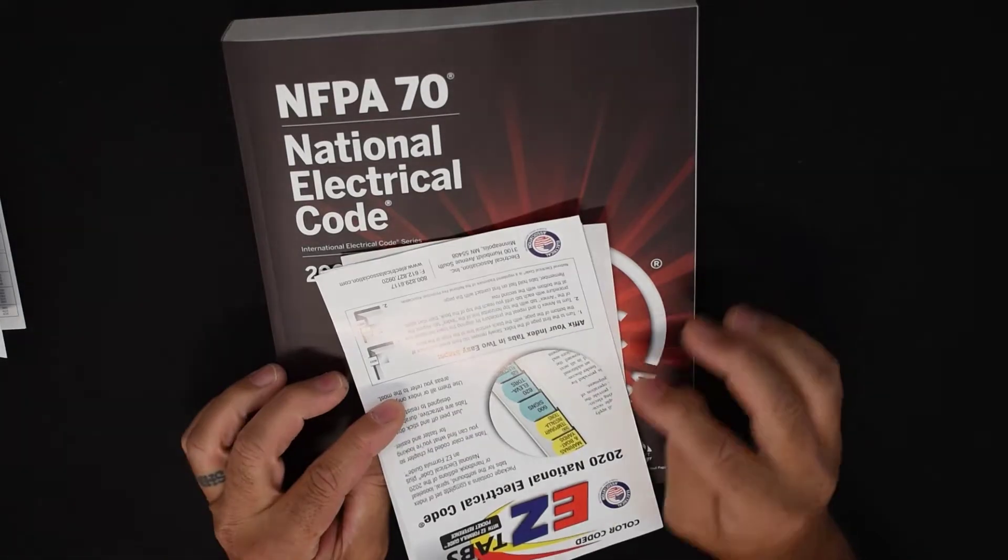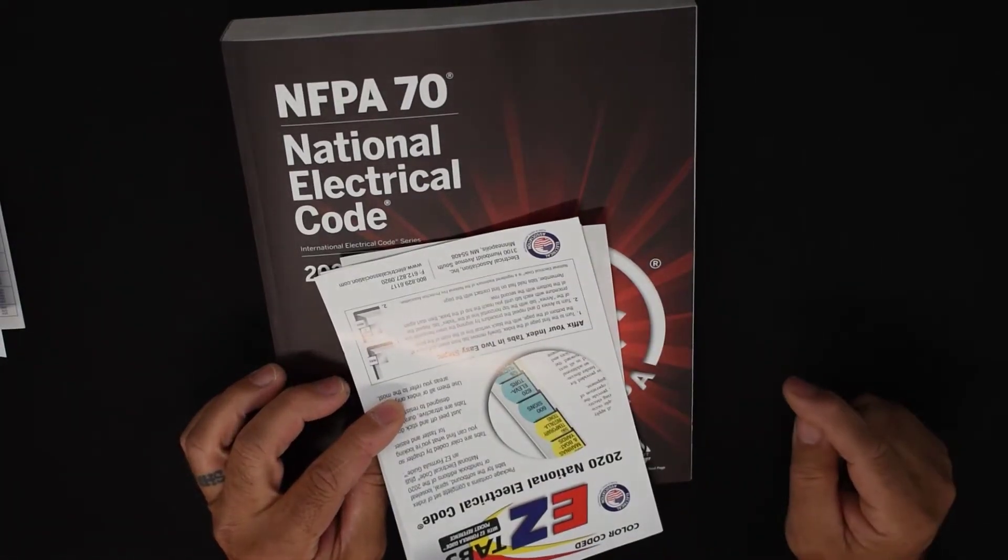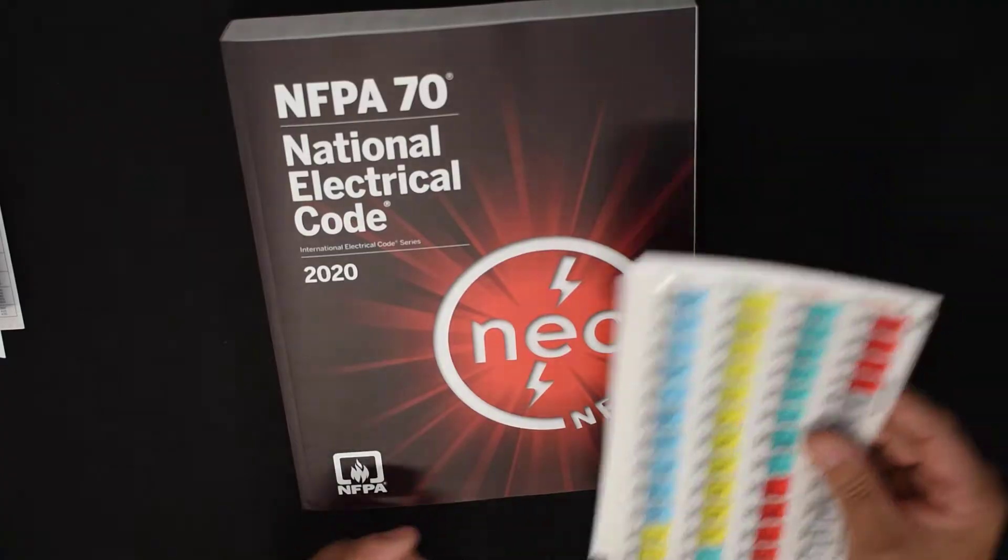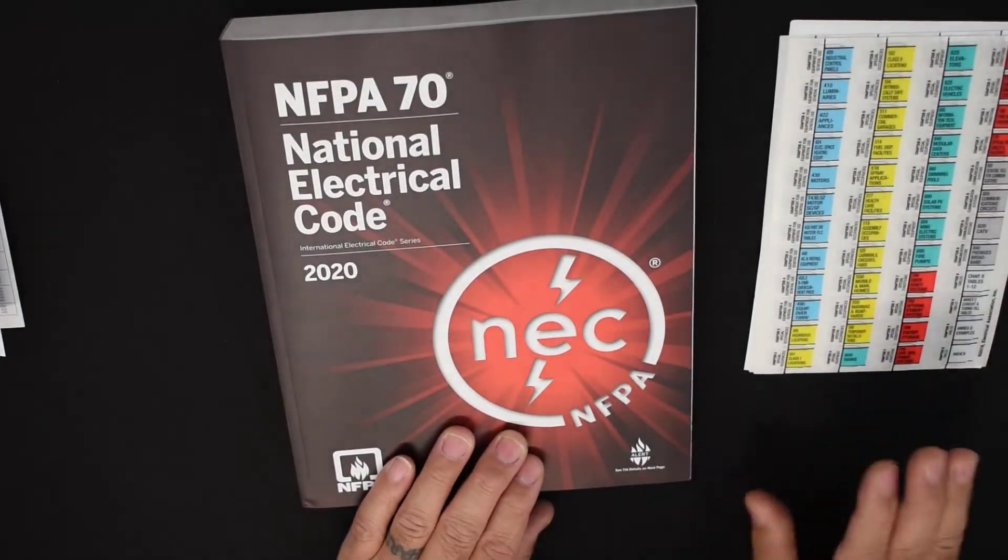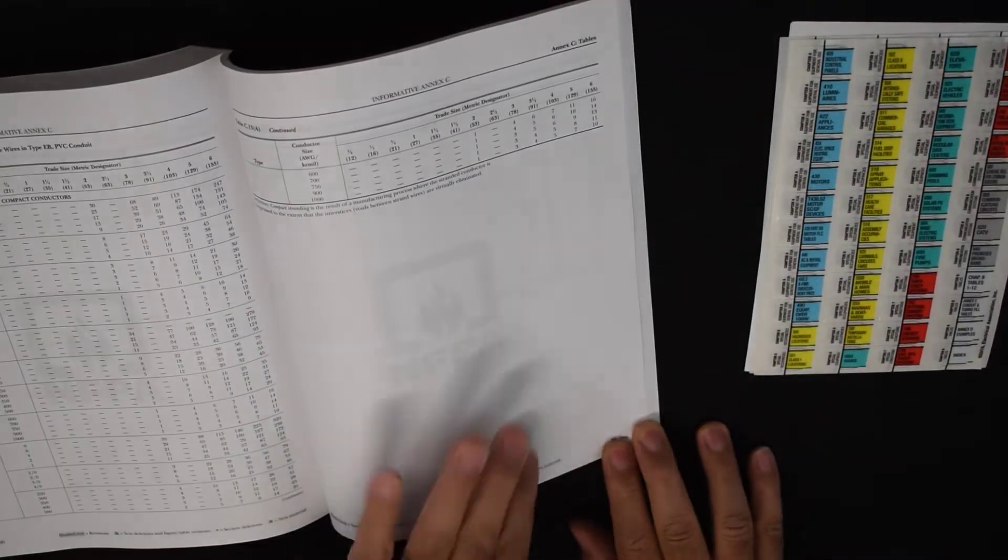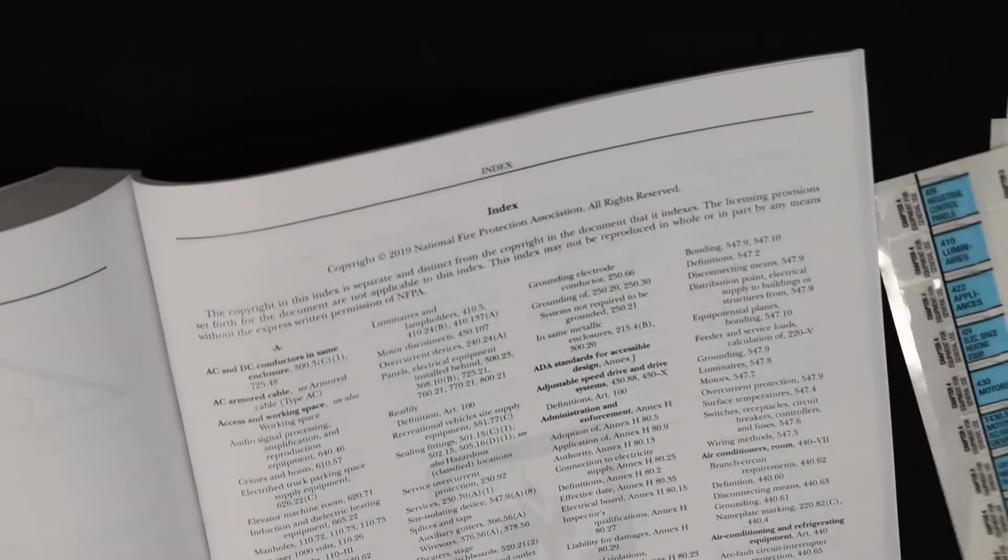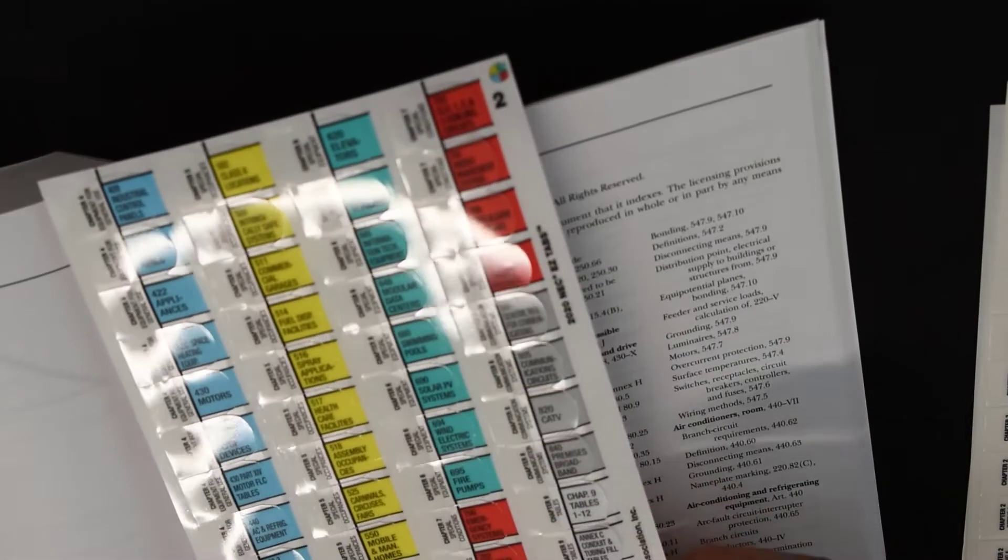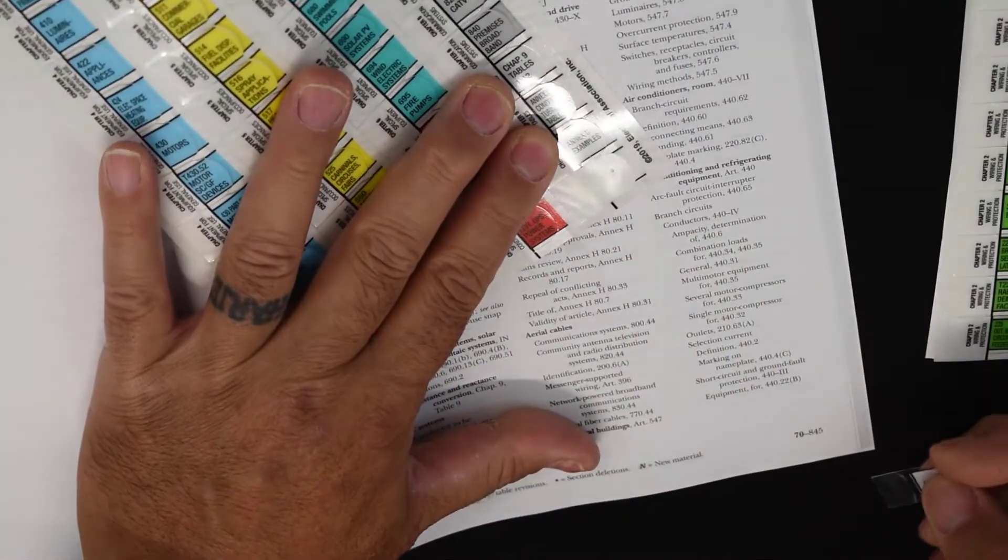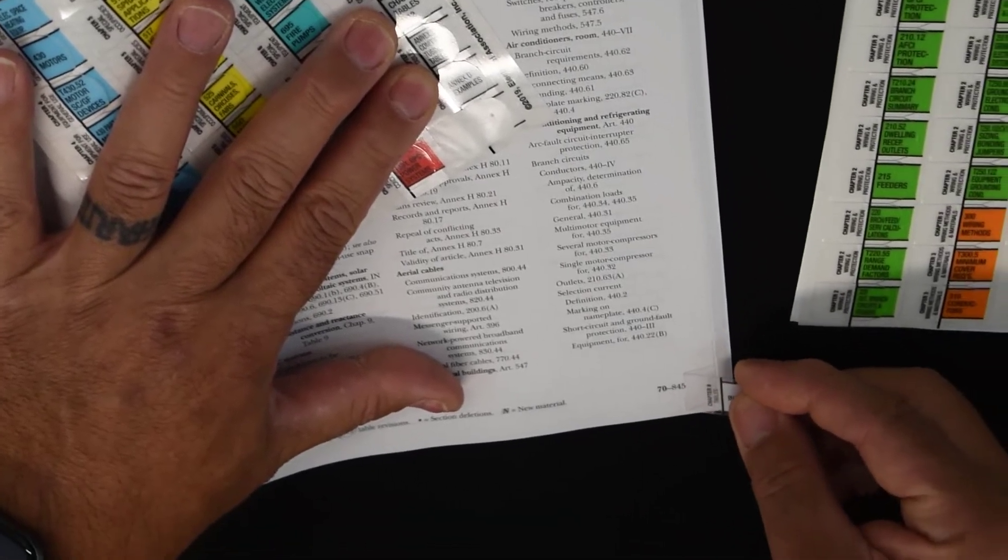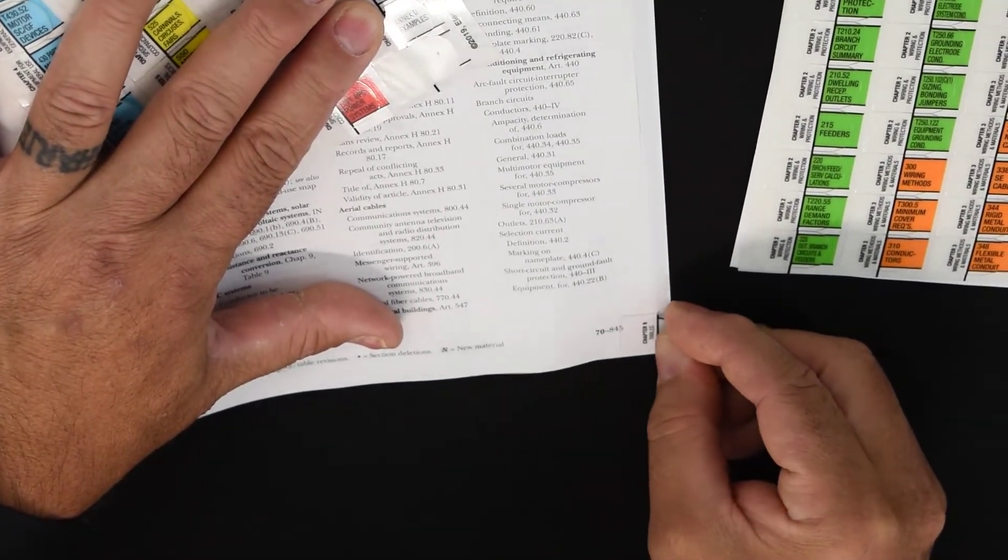If you read the information, it actually gives you some directions on what to do. Do not just stick these in sporadically. It says in the directions to find the index page. So you go toward the back of the book, the index is right here. You take the first tab off, the index tab, and you put it at the bottom of that page right there. Put the black line against the edge of the page. Make it as straight as you possibly can.